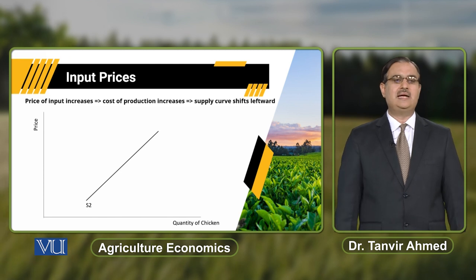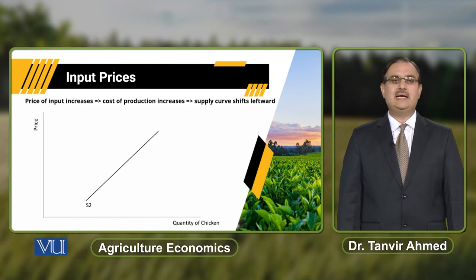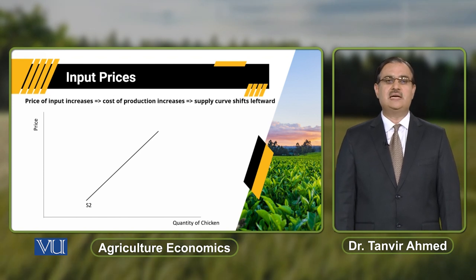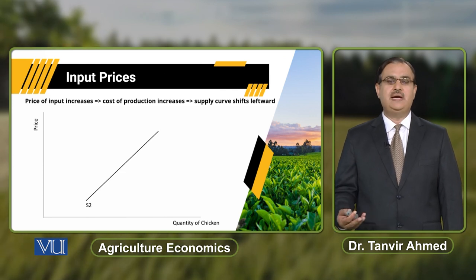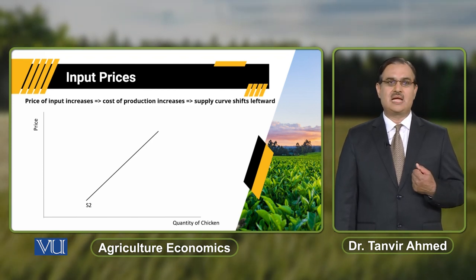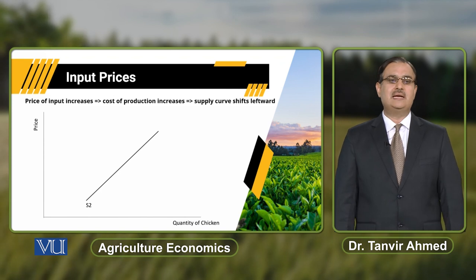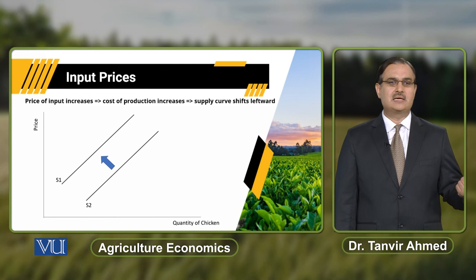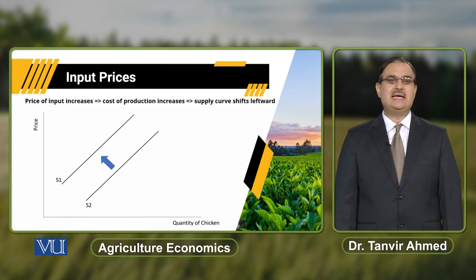Is diagram mein hum show kar rahe hain our relationship between quantity supply of chicken and price. There is a positive association between quantity supply of chicken and price of chicken. Agar hum assume karein there is increase in input prices — there is increase in price of poultry feed. Because of that increase in price of poultry feed, cost of production will increase, and because of that increase in cost of production, supply curve will shift leftward. We will draw another supply curve denoted S1, and this movement from S to S1 indicates there is decrease in supply, and this decrease in supply is because of increase in input prices.